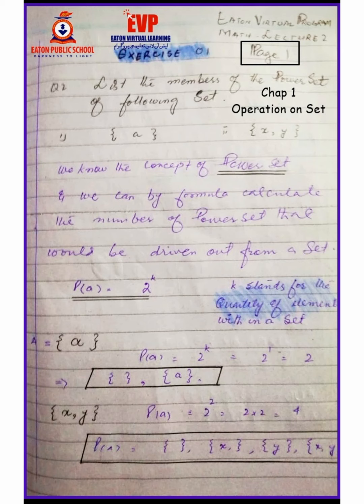Starting with example number one: you have a set with one element A. The power set contains two subsets — one is the empty set (which is a subset) and one containing the element A. So the two combinations are the power set of set A. The formula for the power set of A equals 2 raised to the power k. Here we have one element, so 2 raised to 1 equals 2.